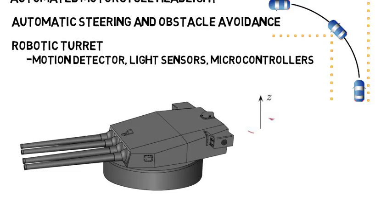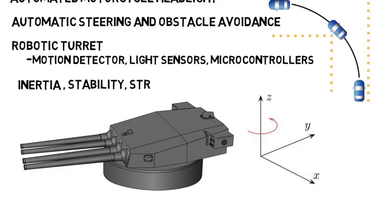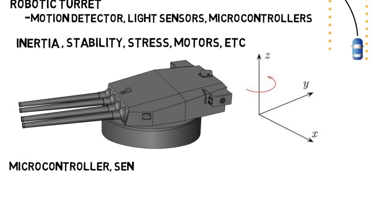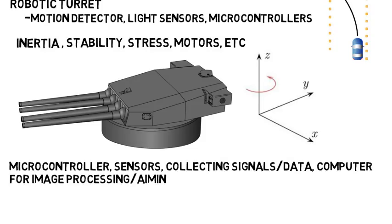The turret project is a good example because the team had to model the axis of rotation, the inertia of the device, and the torque required to rotate at a certain speed. They had to worry about stability, stress, and the motors that turn the turret — that's the mechanical engineering aspect that an electrical or computer engineer would not be as knowledgeable in. But then they also had to worry about the microcontroller, the sensors, collecting signals and data, using the computer for image processing and running the aiming algorithm. The mechatronics students do it all because they are exposed to all these different fields.